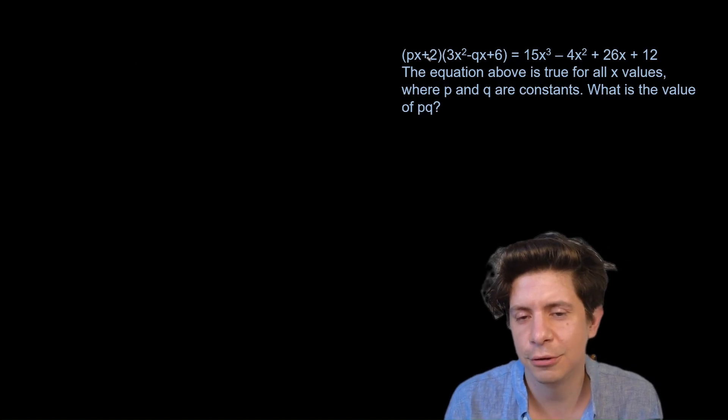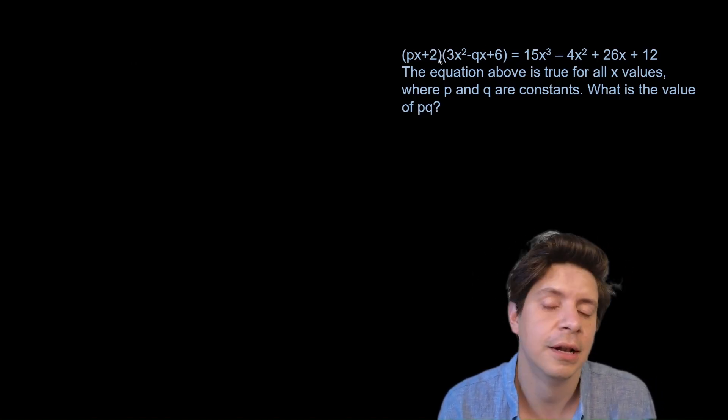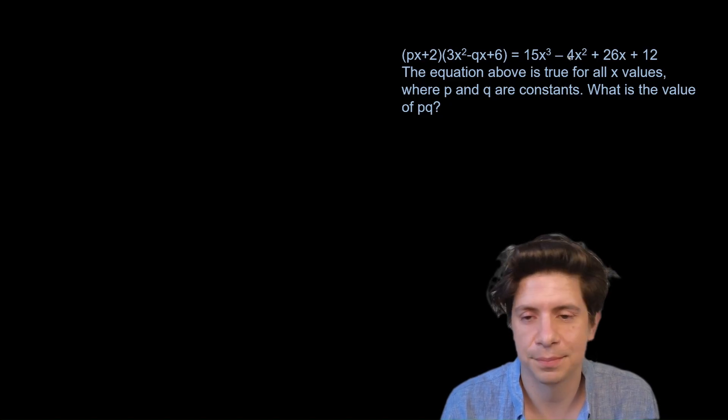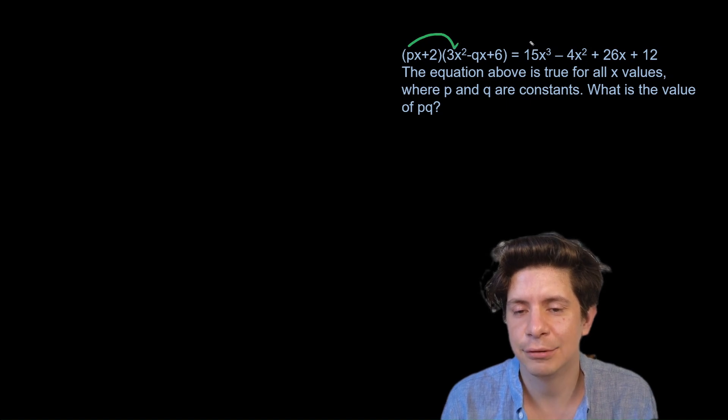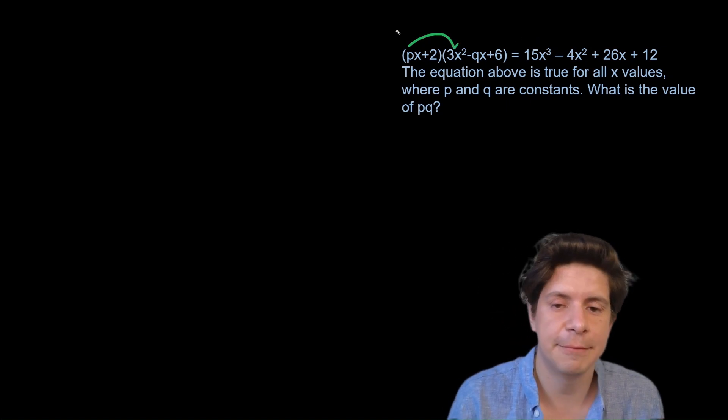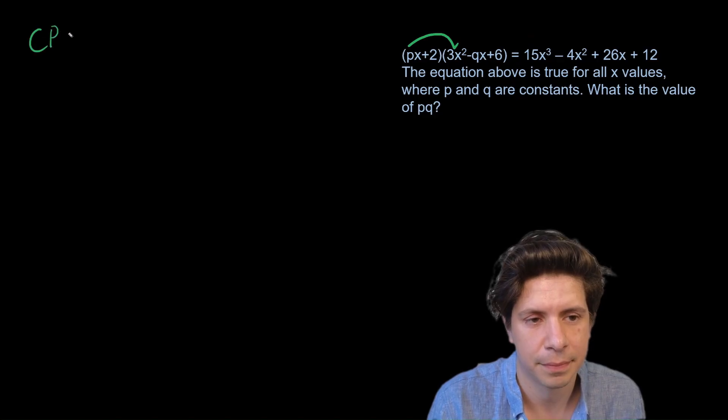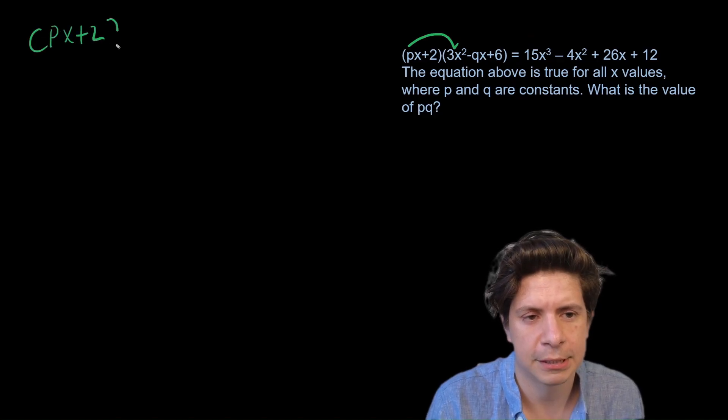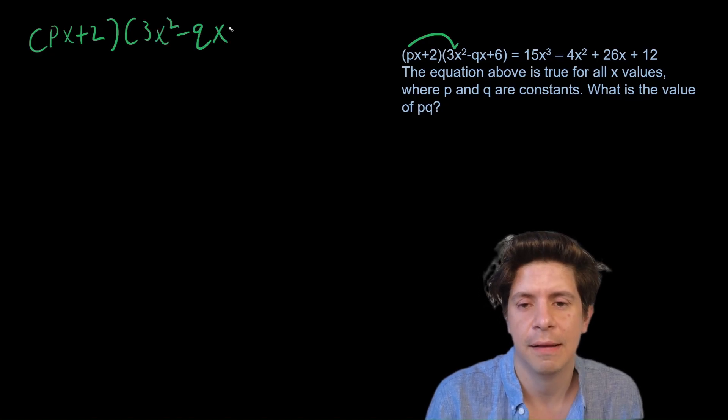Okay, so what you need to do is foil this out. It's not technically foiling I guess because there's a middle part here, but distribute it out and then see how everything lines up. The first part, the px times the 3x² gives you the 15x³, so we can find p pretty quickly.